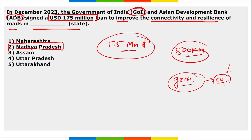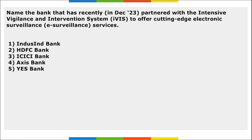Next: name the bank that recently partnered with the Intensive Vigilance and Intervention System to offer cutting-edge electronic surveillance services. It is ICICI Bank.